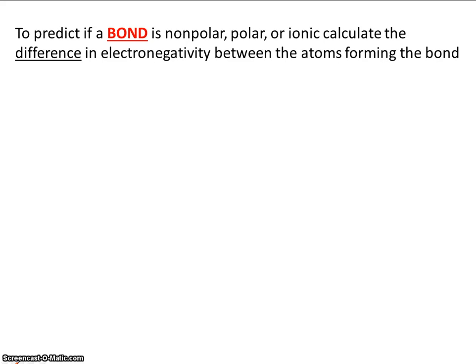In a previous video, we studied ionic bonds and covalent bonds, and we said that there were two types of covalent bonds, nonpolar and polar.